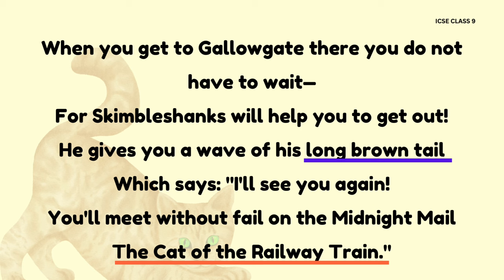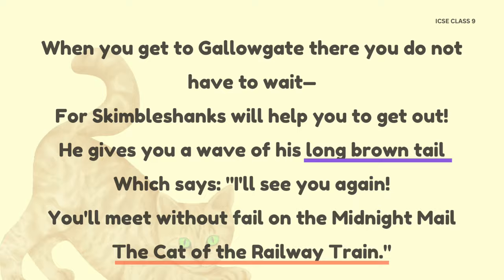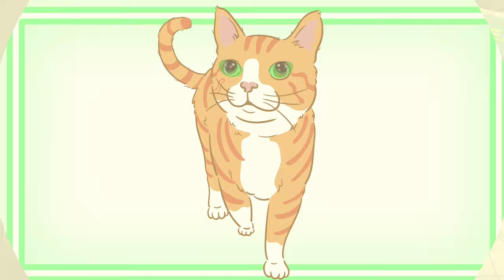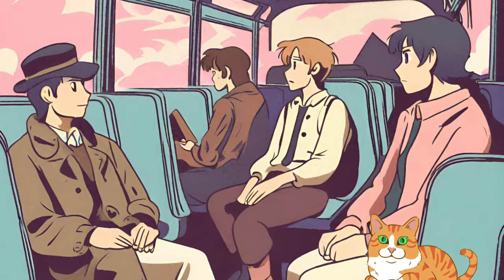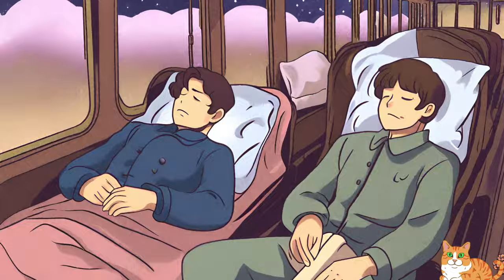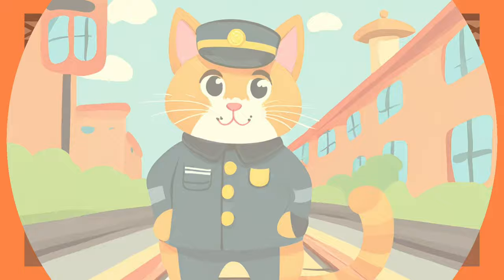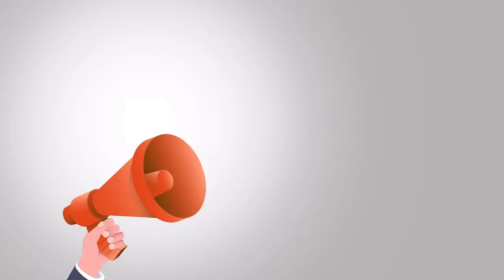The repetition of the last line tells us about the importance and role of Skimble Shanks in the maintenance and supervision of the Nightmail train. Throughout the poem, we have noticed that Skimble Shanks symbolizes order and control, representing the importance of discipline and responsibility in the proper functioning of the Nightmail. In short, the poet skillfully employs rhyme scheme, repetition, personification, irony, imagery, visual imagery, and onomatopoeia to create a whimsical and sound effect.